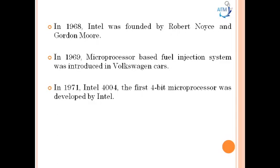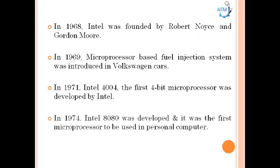In the year 1971, the first 4-bit microprocessor, the Intel 4004, was developed by Intel. In the same year, the microcontroller TMS1000, a 4-bit microcontroller, was developed by Texas Instruments. Further, in the year 1974, Intel 8080 was developed and it was the first microprocessor to be used in a personal computer.